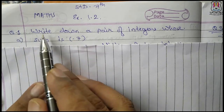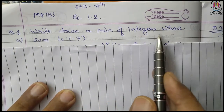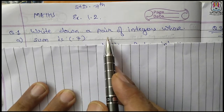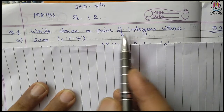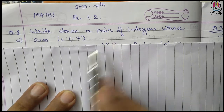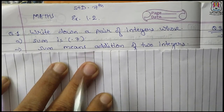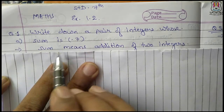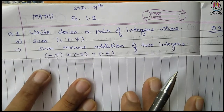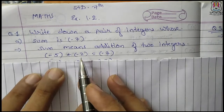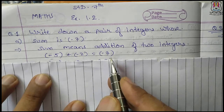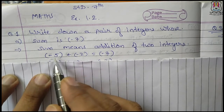First question: write down a pair of integers whose sum is minus 7. We have to write down a pair of integers whose sum is minus 7. Sum means addition of two integers. There are so many possibilities to have the answer as minus 7. I have written a few over here.